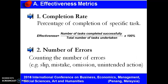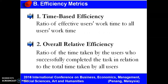Another effectiveness metric is the number of errors. This measurement involves counting the number of errors that the participant makes when attempting to complete a task. Errors may be in the form of a slip, mistake, omission, or unintended action that a user makes when attempting to complete a task.